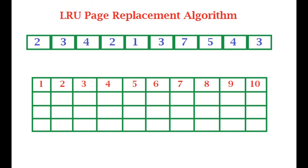The first three iterations are pretty simple — we have space in the memory cells, so there'll be no replacement. We just put them in serially: first two goes in, then three comes in the second iteration, and four comes in the third iteration. Next, two comes in again but since two is already there, we won't be replacing it.